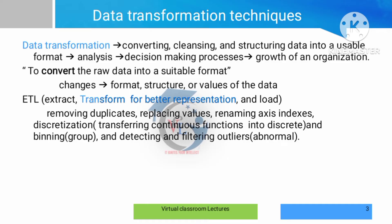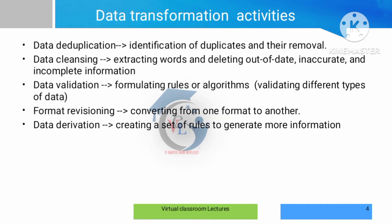With proper data, we can do visualization and report generation. First, we perform a transformation on raw data. In the data transformation process, we handle duplication. We also do data cleansing, which removes duplicates. Cleansing is essentially preprocessing — it addresses out-of-date content, inaccurate entries, and incomplete information.